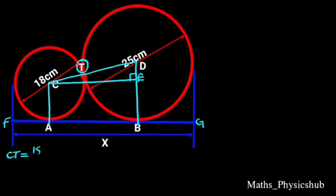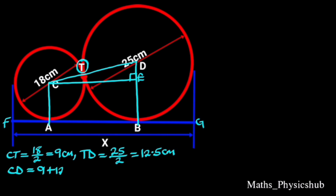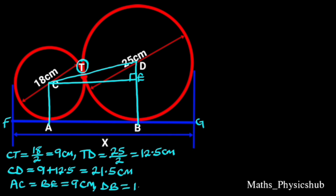From the diagram, notice that CT equals 18 over 2, which equals 9 cm — that is the radius of the small circle. TD equals 25 over 2, which equals 12.5 cm — that is the radius of the big circle. CD equals 9 plus 12.5, which is 21.5 cm, reason: external touching, which is the sum of the radii of the two circles. AC equals BE, which is 9 cm — that is the radius of the small circle. DB equals 12.5 cm, which is the radius of the big circle.